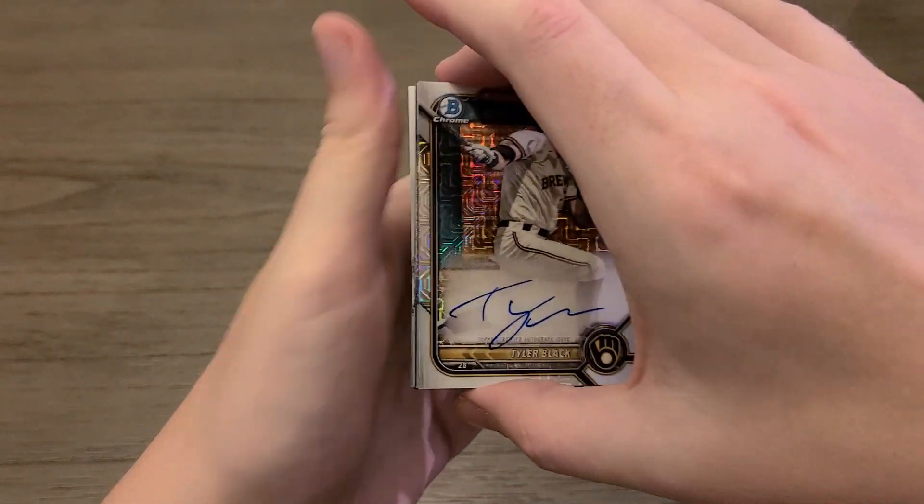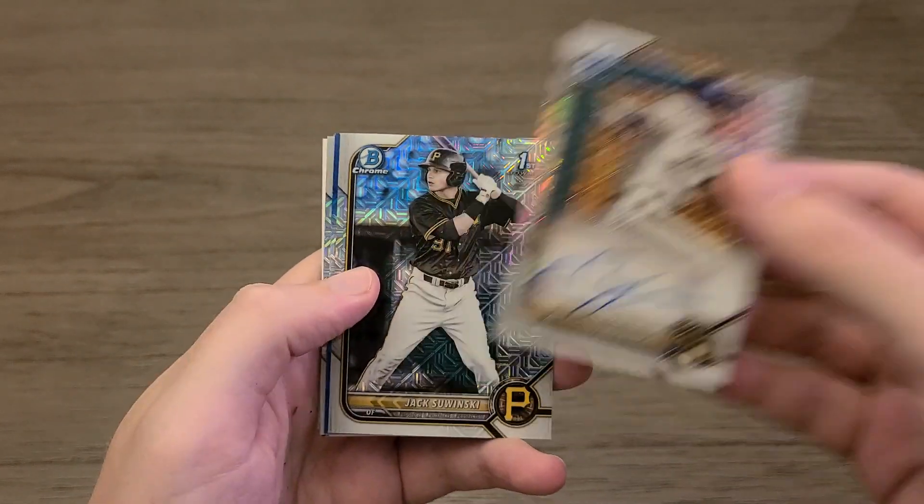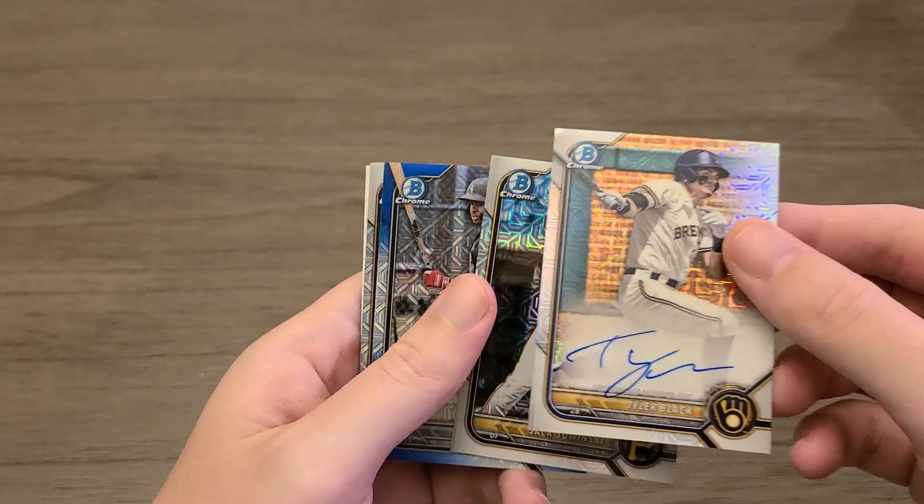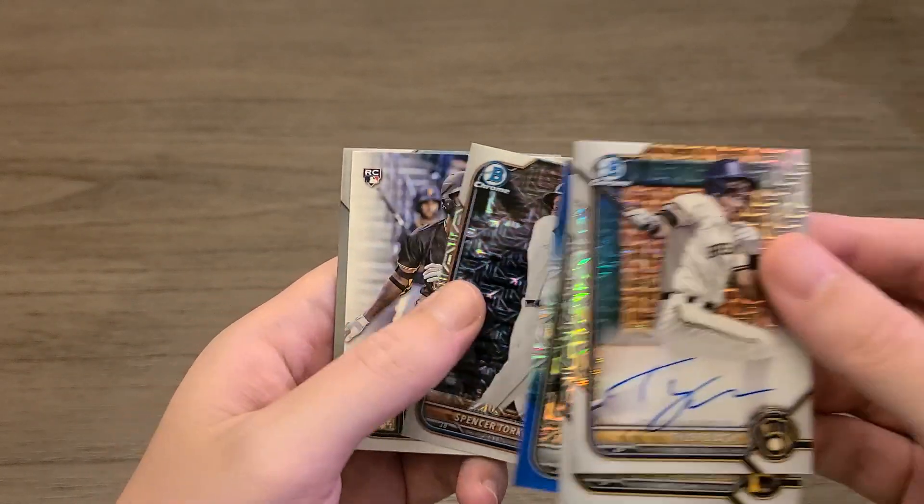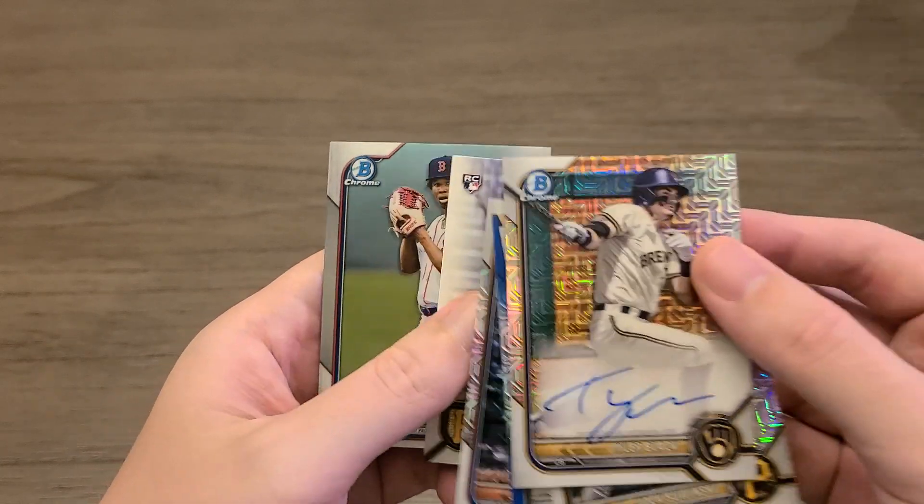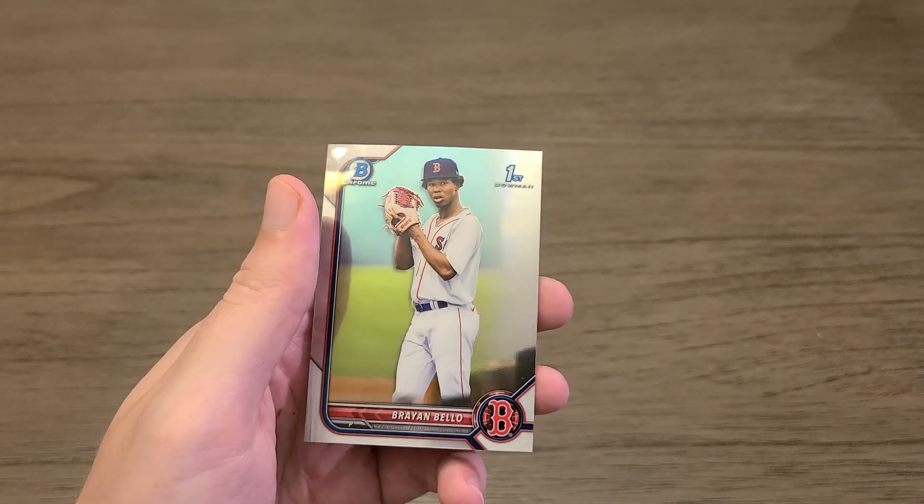So, let's do a quick recap of the relatively good cards. We got the Tyler Black Auto. Jack Suwinski First Mojo. The Elijah Tatis Blue Mojo out of 150. Spencer Torkelson Mojo. An O'Neil Cruz Base Rookie. And a Brayan Bello Rookie Chrome.